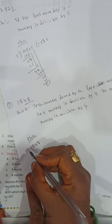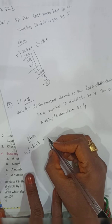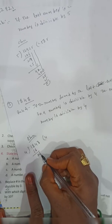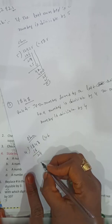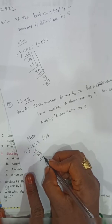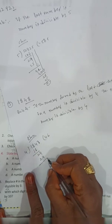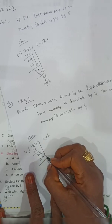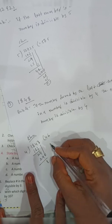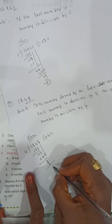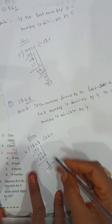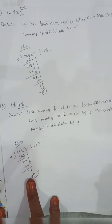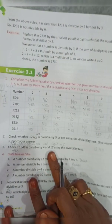Check: 1848, last two digits 48 divided by 4. 4 goes into 48 — 4 times 2 is 8, remainder 0. So 48 is divisible by 4, meaning the whole number 1848 is divisible by 4.